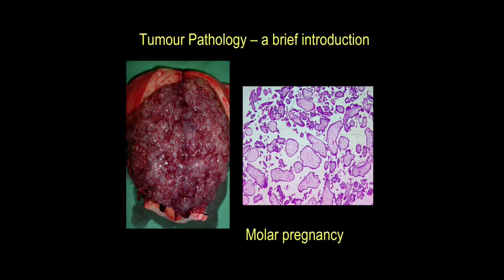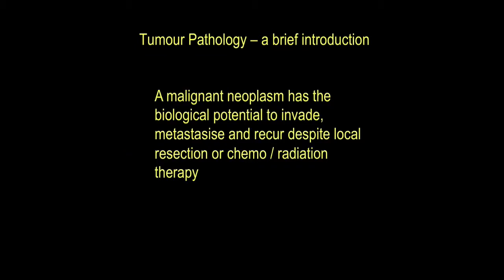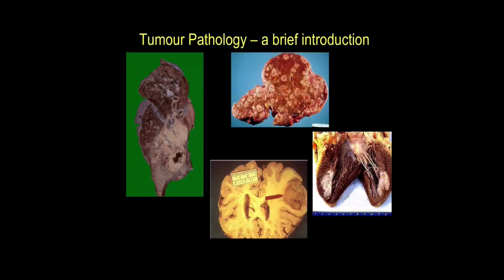The reason we go to all this trouble of introducing terms and thinking about tumors in general — particularly identifying malignant neoplasms — is that a malignant neoplasm is one with the biological potential to invade adjacent tissues, to metastasize (spread to other parts of the body), and to recur despite clinical interventions such as local resection, chemotherapy, and radiotherapy. Across this vast range of tumors and terminologies, the bottom line is to identify these tumors so we can maximize the patient's care and outlook.